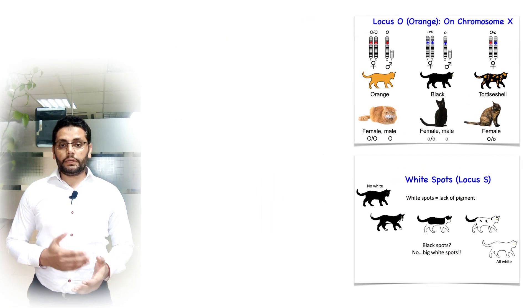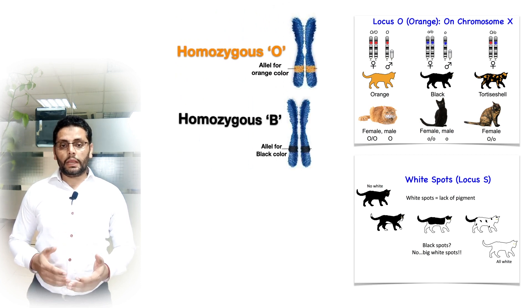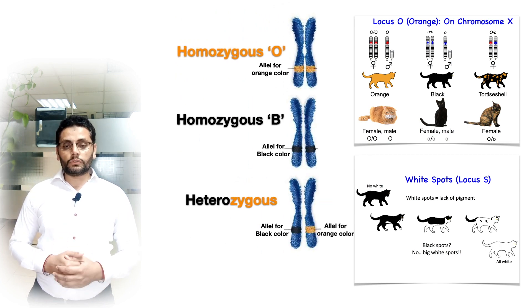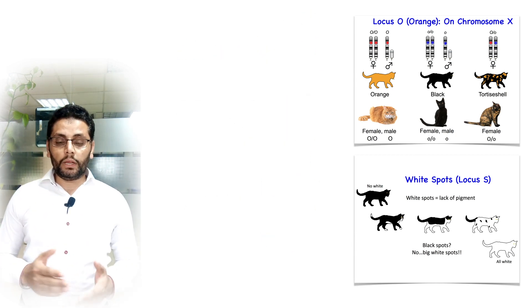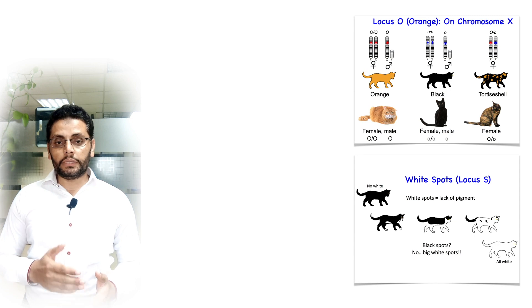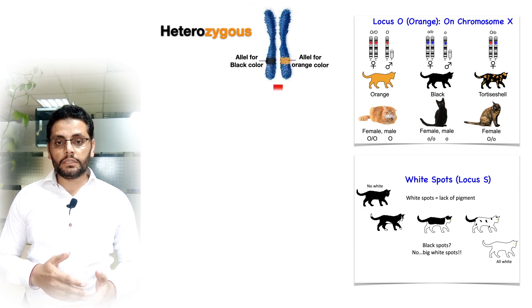The calico pattern results from an interaction between a sex-linked color locus O and an autosomal white spotting locus W. Color locus O carries two alleles, O and B, for orange and black. In heterozygotes, X inactivation results in the selection of melanocytes that express either one or the other allele.